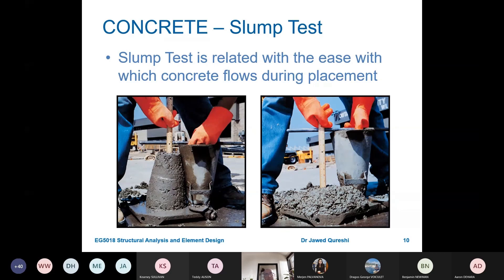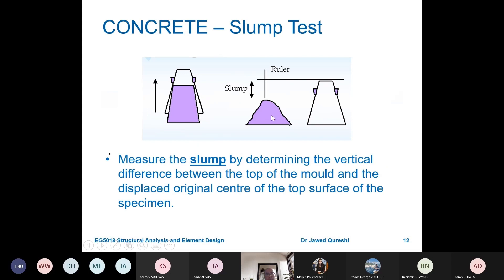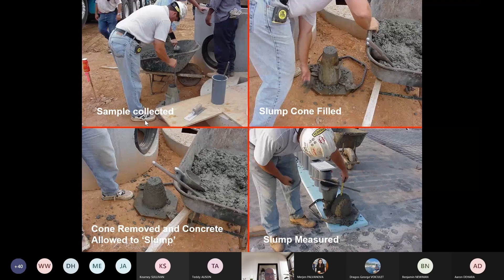The slump test works by pouring concrete into a cone, then lifting the cone to see how much the concrete drops. If it drops more, it has more slump and is more workable; if it drops less, it has less water and is less workable. The slump cone is filled in three layers, each rodded 25 times. The cone is 30 cm high and 10 cm wide at the top. Slump is measured as the vertical difference between the top of the mold and the displaced concrete. The cone is removed and slump is measured.